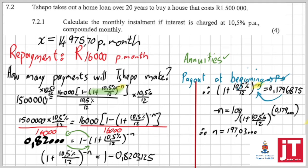In reality, it means that there's going to be 197 full payments and one part payment that we are going to look at in a future video, in a next video.